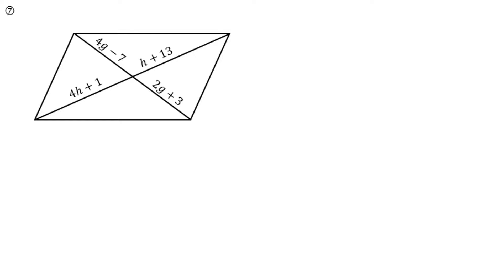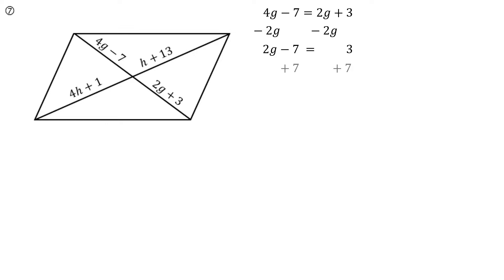Number 7. Because the diagonals are bisected, I know 4g minus 7 has to equal 2g plus 3. Subtract 2g from each side — I'm going back to showing all the detail. 2g minus 7 has to be 3. Add 7 to each side. 2g has to be 10. Divide both sides by 2. g has to be 5.